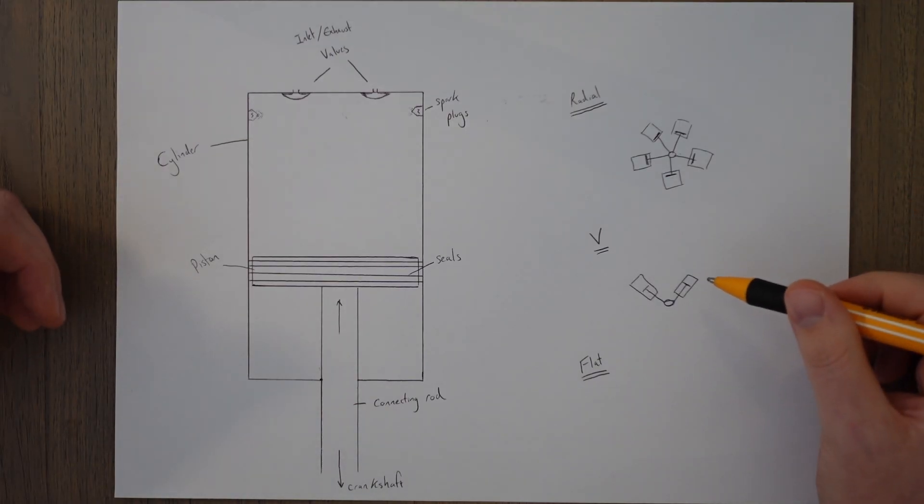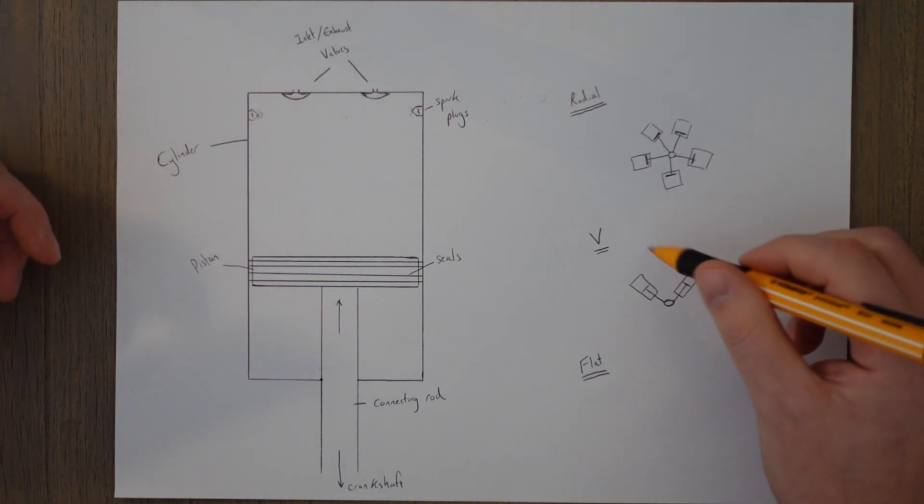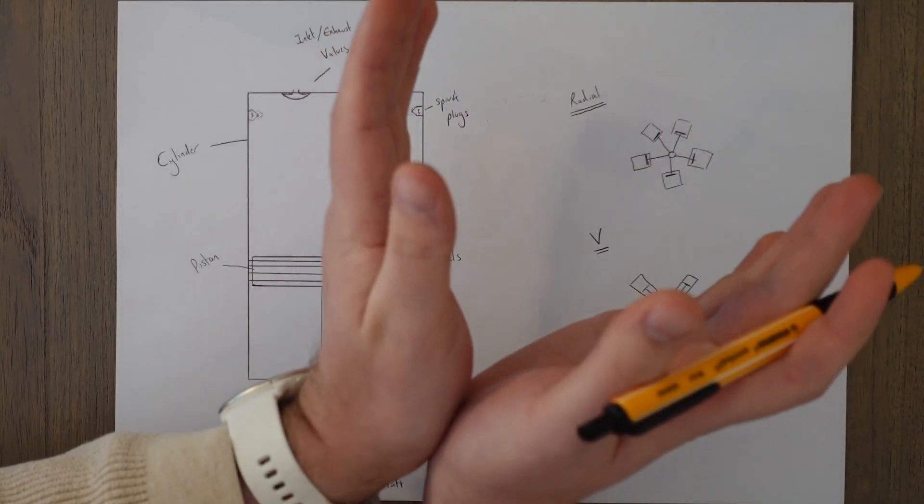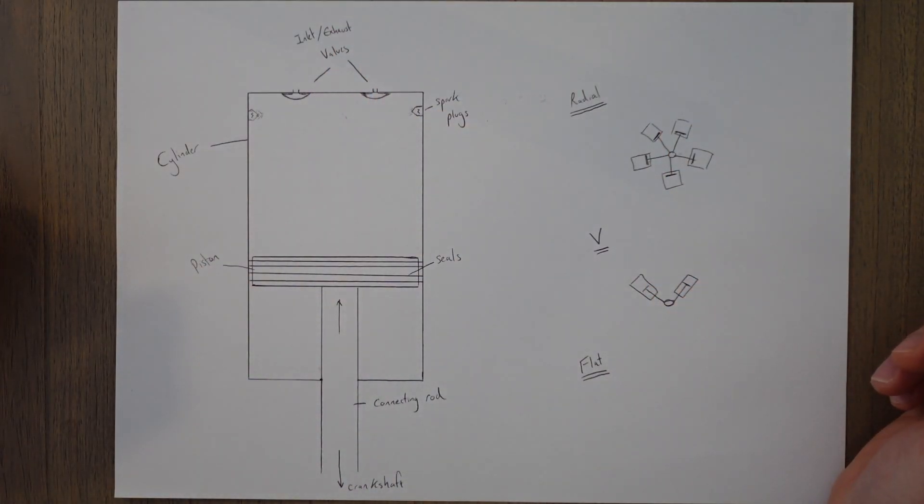You can also get V-shaped engines. These are most often associated with high-performance engines, and it is where the cylinders are arranged in a V-shape. You've got two banks of cylinders offset from each other. It allows for more cylinders to be added for the same length of engine.